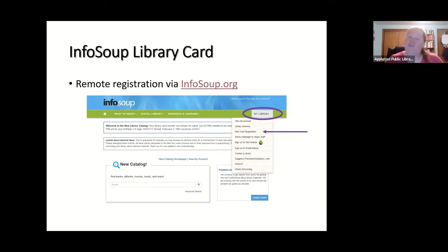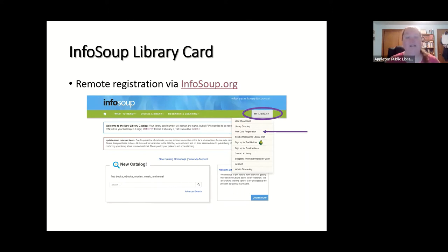If you don't have an Info Soup card, as long as you're a Wisconsin resident — even if you're a snowbird — you can get a card. Right now with the library closed due to the pandemic, we're doing remote registration via our website at infosoup.org. Under 'My Library' there's a button for new card registration. Filling out the form gives you a temporary card number, but we need you to verify your address before issuing a real card number that works for all databases.